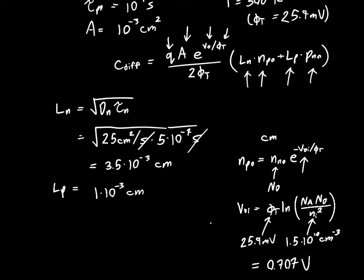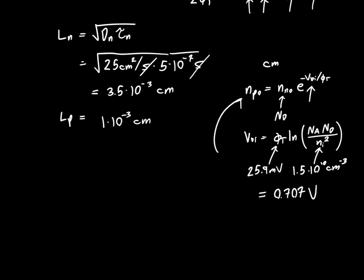So if we plug that into our expression for NP naught, again, we don't really have to worry about units. But if we evaluate NP naught, we'll see that we get 1.13 times 10 to the 5 per centimeter cubed. And this seems low, but it is the minority carrier distribution on the P side. And we know that the P doping is about 10 to the 15. So 10 to the 5 times 10 to the 15, that makes sense. It's about 10 to the 20. So we're doing good.